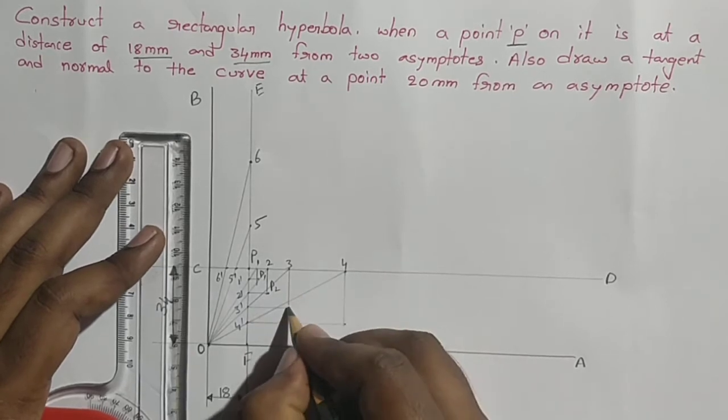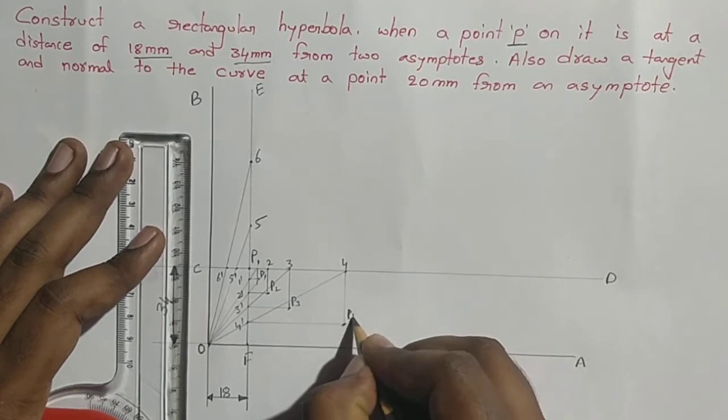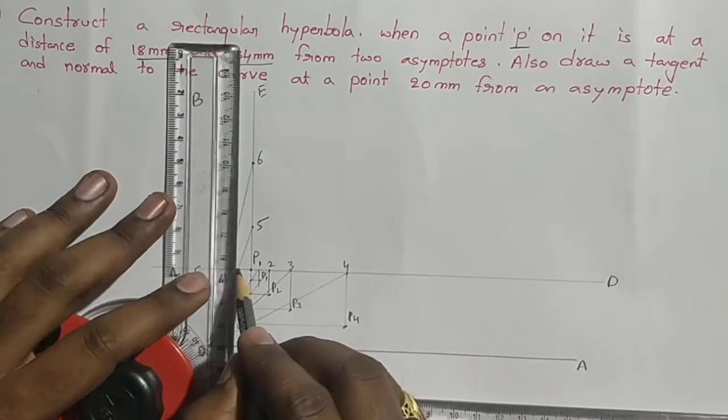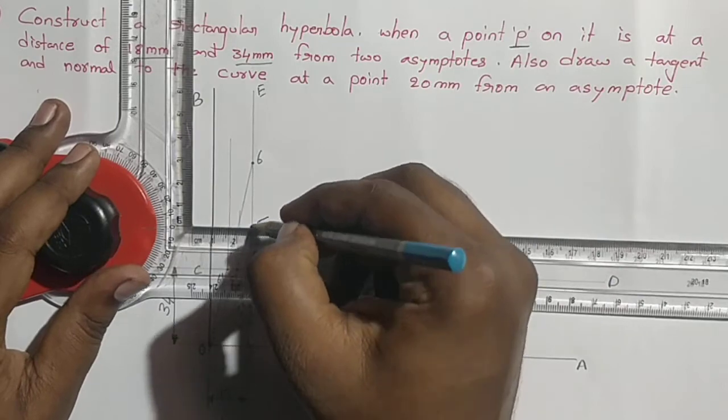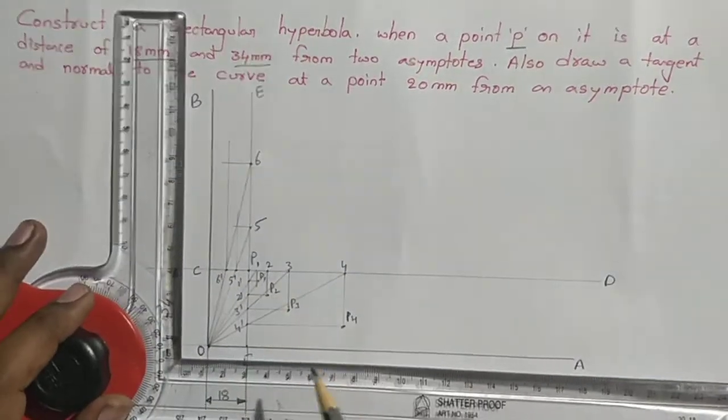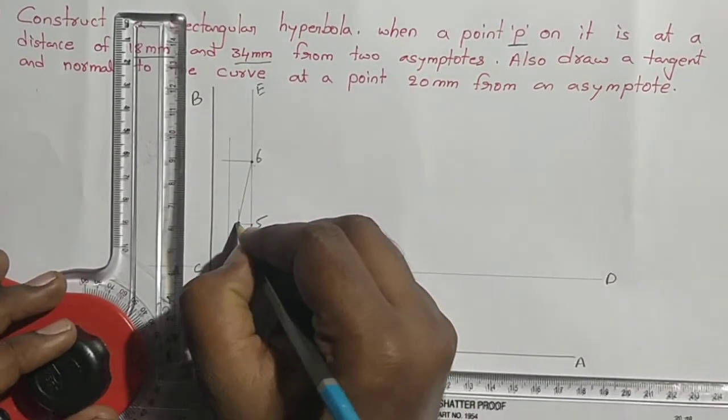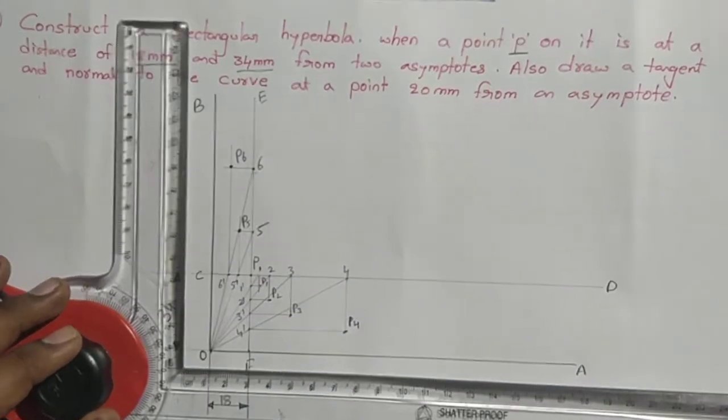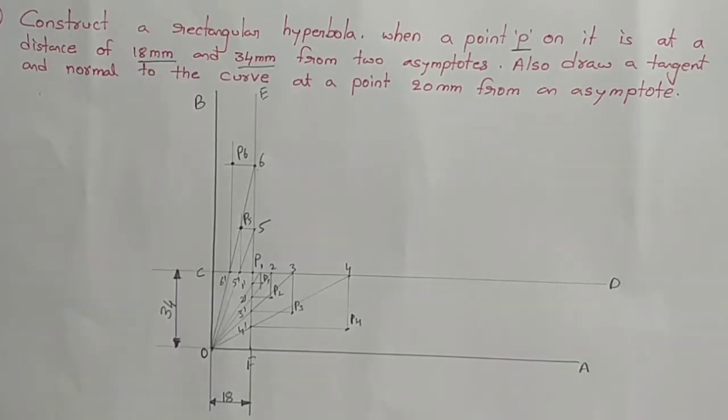These horizontal and vertical lines intersect at points: P1, P2, P3, and P4. Similarly draw the vertical line from 5 dash and 6 dash. These horizontal lines and vertical lines intersect at two different locations: P5 and P6.